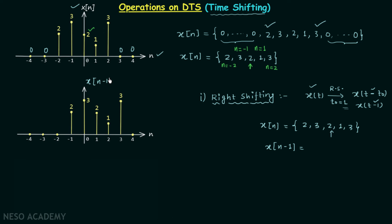The waveform of Xn minus 1 has the same values 2, 3, 2, 1, 3, but now Xn minus 1 equals 3 when n equals 0, so we place the arrow mark below 3. The whole signal waveform shifts towards the right, while the arrow in the representation shifts towards the left. So when the signal waveform shifts right, the arrow shifts left — and this is all for right shifting.